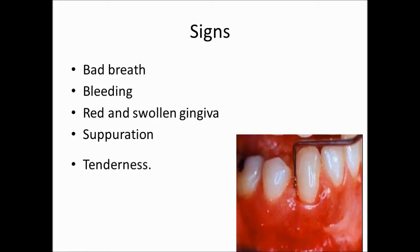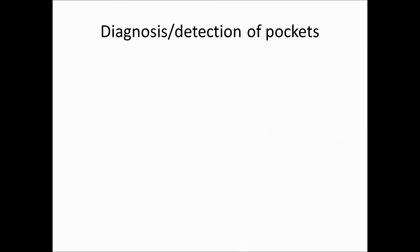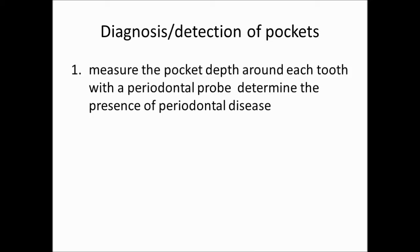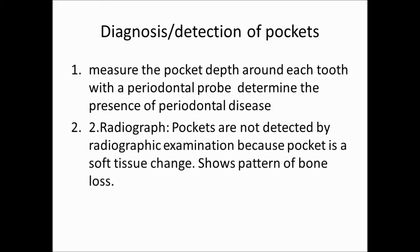It could be tender or it might not be tender. In the picture shown, you can see the probe going in, with the gingiva red and swollen — it looks ready to burst. We use the probe to measure the depth of the pocket around the tooth to determine the pocket depth. We also take a radiograph — although soft tissue is not visible on a radiograph, we look for the pattern of bone loss: whether it is horizontal or angular bone loss.